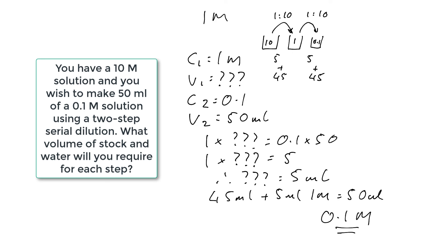And that is how we use a two-step serial dilution to effectively do a one-in-100 dilution — that is, two one-in-10 dilutions to give us the final 0.1 molar solution.